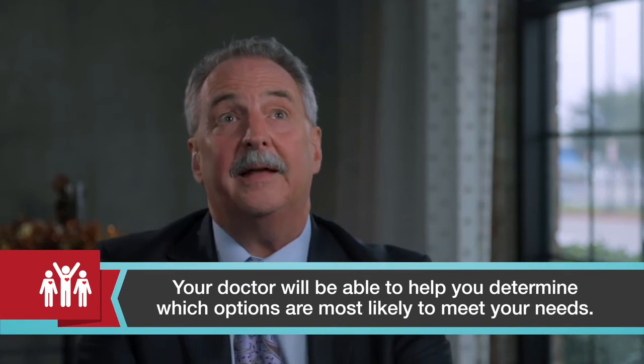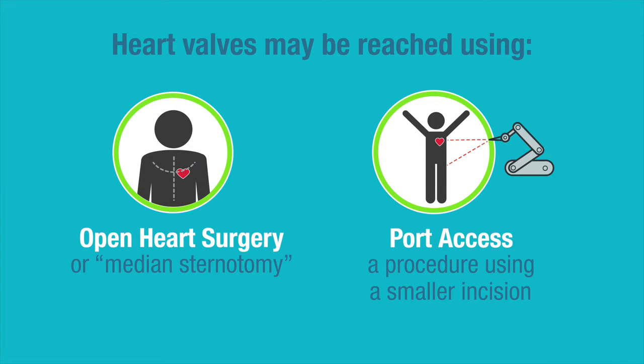How do we put a valve in? The principles of repair and replacement stay the same whether you access that valve through a median sternotomy, which is an incision through the breastbone, a small incision between the ribs on the side — which some call port access — or whether you use port access with a robot to help throw the stitches. Those are all matters of access, not matters of repair or replacement.